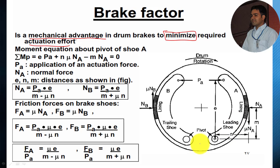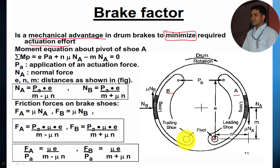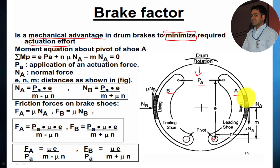As shown in the figure, you can observe the two brake shoes A and B. Both brake shoes are pivoted at the bottom at these pivot points. The actuation effort to apply the brake is applied here and it is distributed on both brake shoes in terms of P, where Pa indicates the actuation effort. The shaded portion is the brake lining.